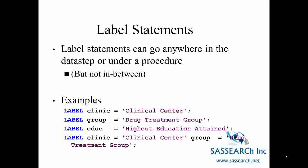Label statements can go anywhere in the data step or under a procedure, but not in between. For example, LABEL CLINIC = 'Clinical Center' means that anytime you use the variable CLINIC in a procedure, the label 'Clinical Center' will appear to represent that variable. Similarly, LABEL GROUP = 'Drug Treatment Group' explains the variable in more detail, and LABEL EDUC = 'Highest Education Attained' makes output more readable for someone else looking at it.